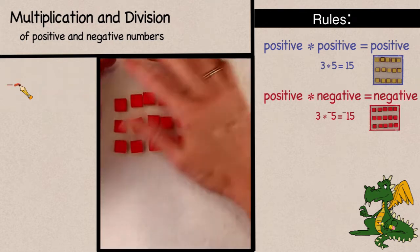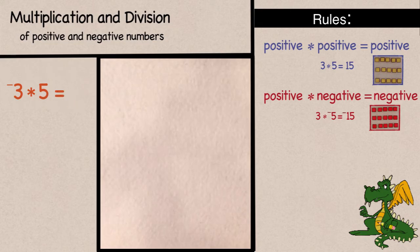What about negative 3 times 5? We can't have negative 3 sets of something, so what can we do? Well, since one meaning of the negative sign is the opposite of,